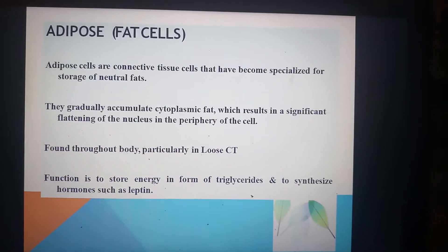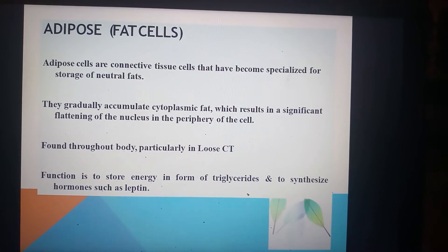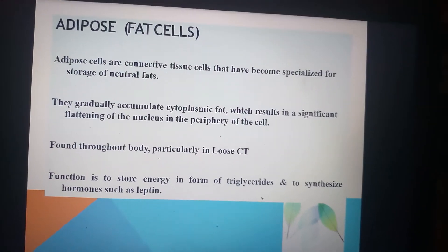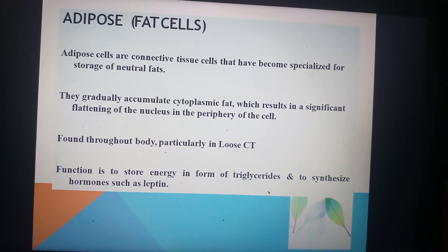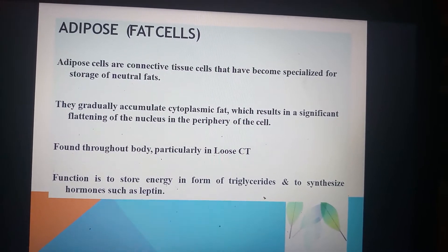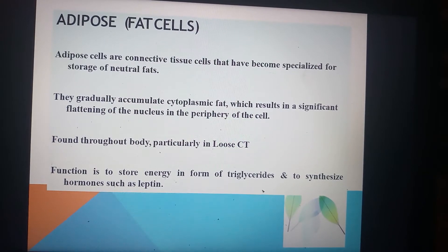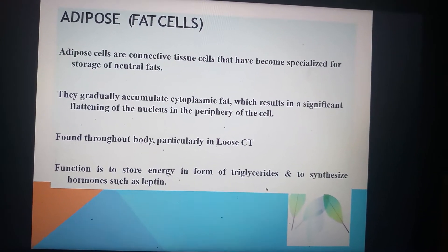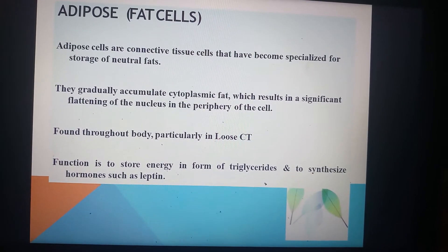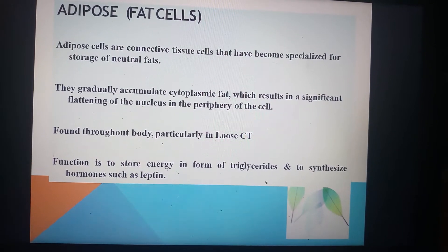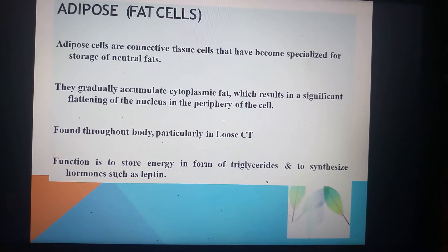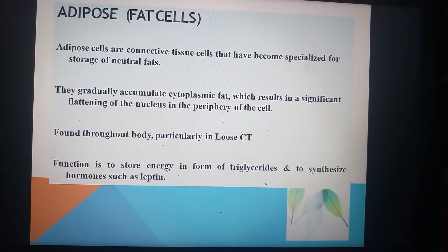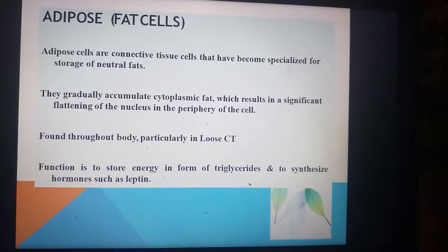Adipose cells, also known as adipocytes or fat cells, are connective tissue cells specialized for storage of neutral fats. They gradually accumulate cytoplasmic fat, which results in significant flattening of the nucleus to the periphery of the cell — this is called the signet ring appearance. They are found throughout the body, particularly in loose connective tissue. Their function is to store energy in the form of triglycerides and to synthesize hormones such as leptin.